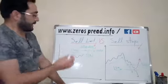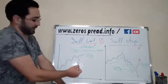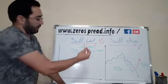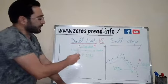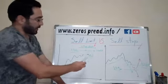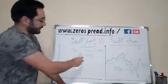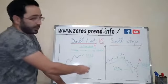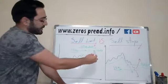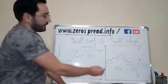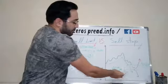So to summarize: the sell limit is when you want to sell something at a price higher than the current market price — current price is 1290 and you want to sell at 1300, so you place a sell limit. The sell stop is when you want to sell at a price lower than the current market price — you place the sell stop.